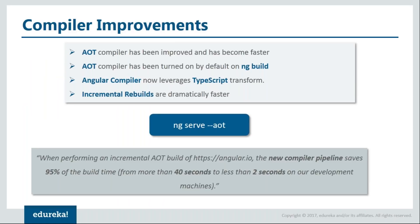Let's understand the significant improvement in the compiler. Angular works in two ways when compiling: just-in-time (JIT) compilation, where templates are compiled in the browser at runtime, and ahead-of-time (AOT) compilation, where templates are compiled beforehand. AOT has many advantages — it lets the browser download a pre-compiled version so it can render immediately without waiting for compilation. However, the AOT compiler was slow before Angular 5, so most developers used JIT in development and only used AOT for production builds. The reason was that every template change triggered a full recompilation.